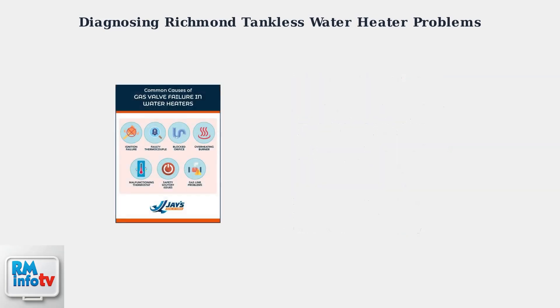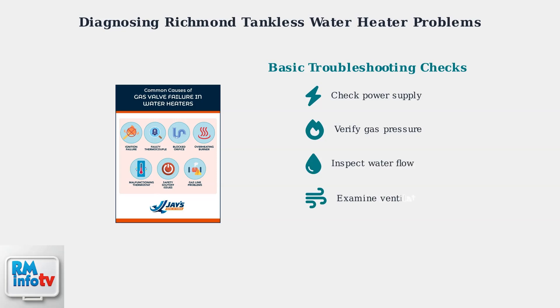When troubleshooting any Richmond tankless water heater issue, always start with these basic checks: verify the power supply, check gas pressure, inspect water flow, and examine ventilation systems.